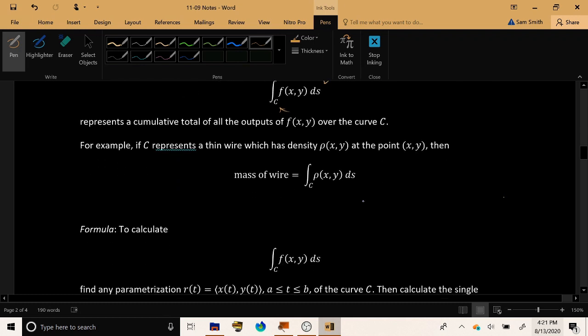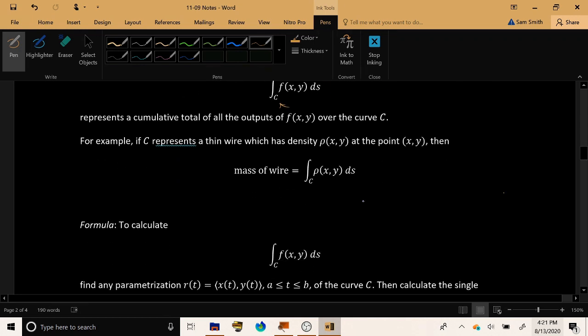So as an example, if we have c representing an actual physical wire or an actual physical piece of string, and we have some function rho of xy, which measures the density of the wire at a certain point, then if you integrate the density function using this line integral, you'll get the overall total mass of this curved wire or piece of string.